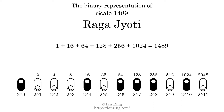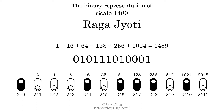That is why the scale number, in decimal, is 1489. The scale number not only enumerates the scale with a unique index, but it also literally describes the tonal content of the scale, represented as a binary number in base 2. The scale number is 010111010001.